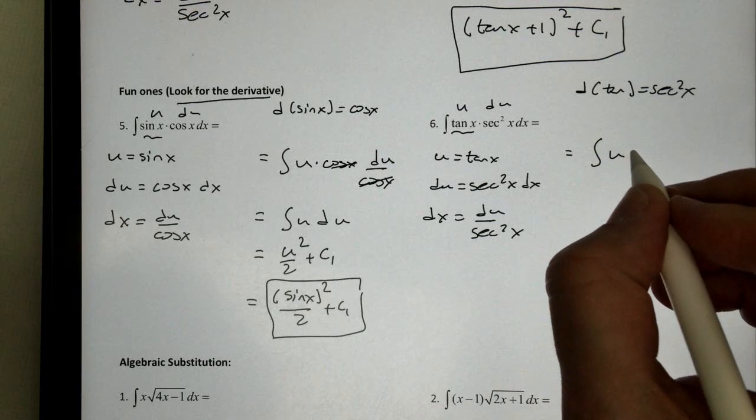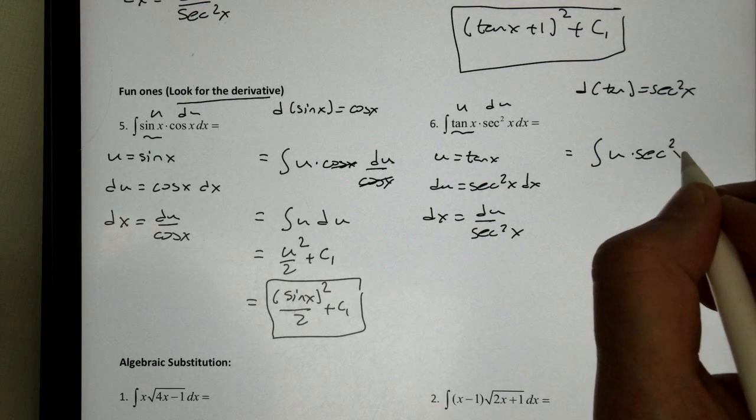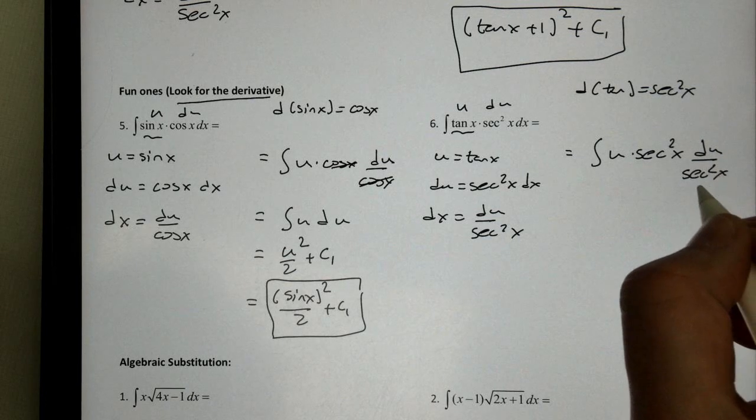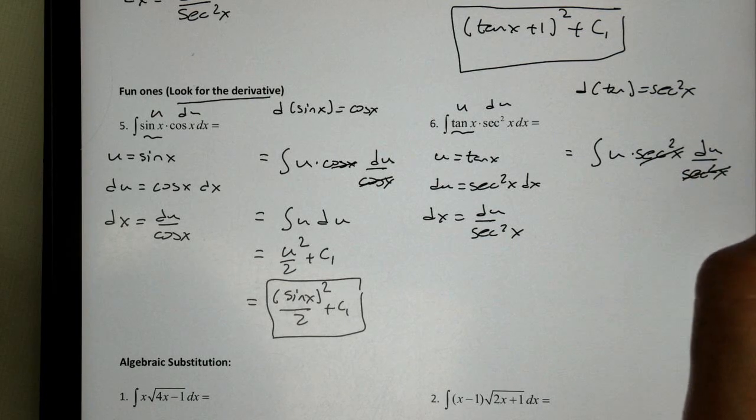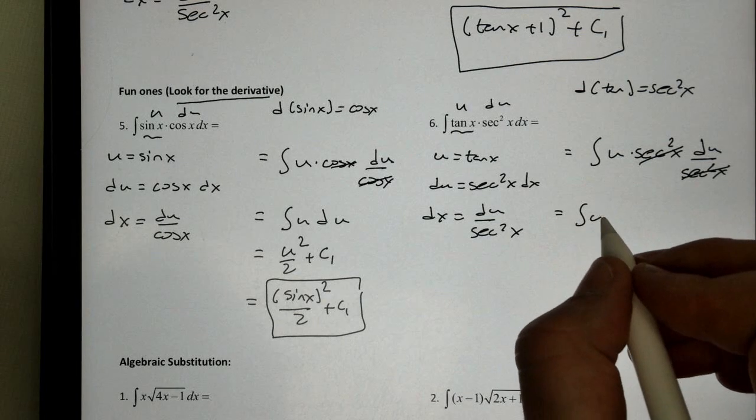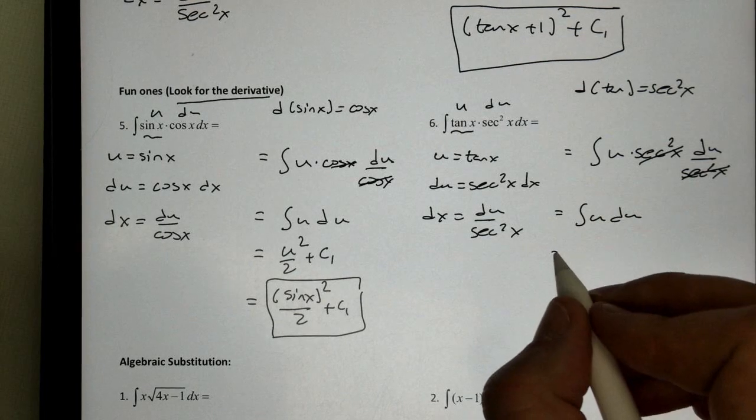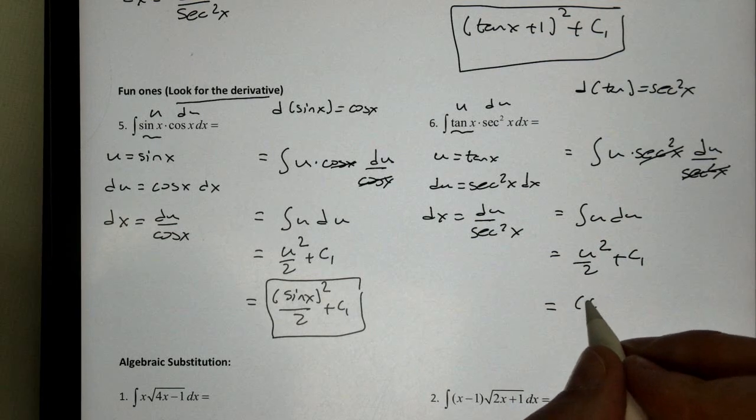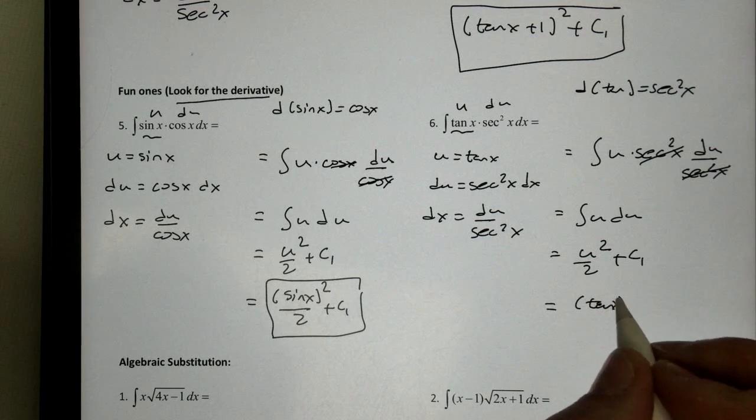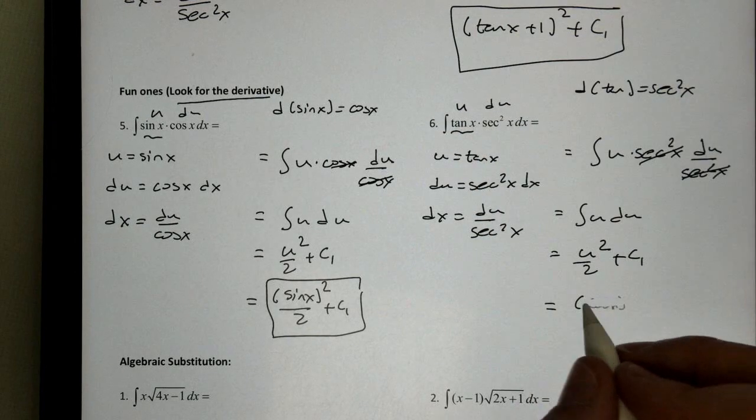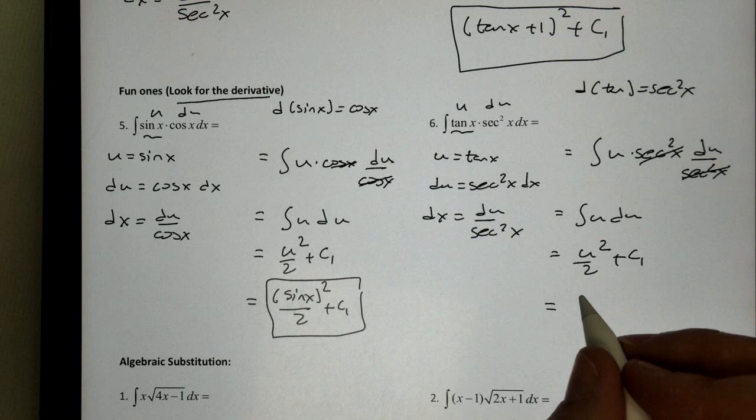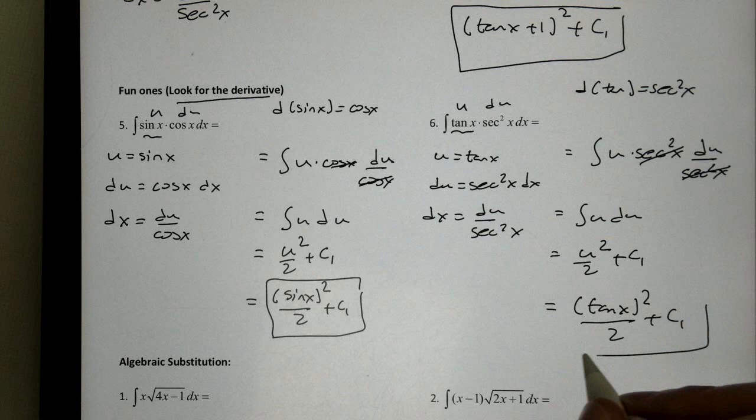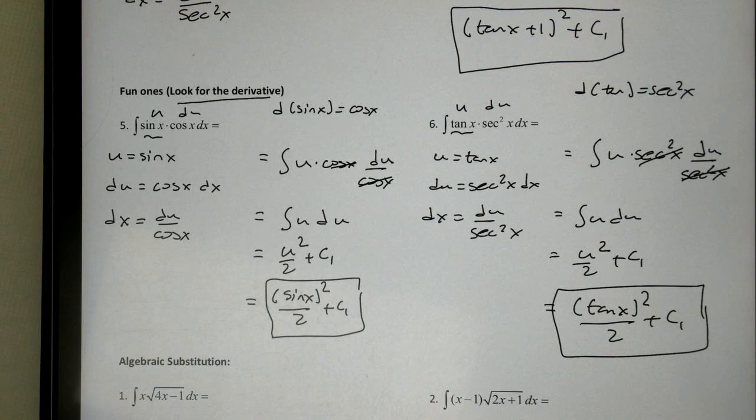So when we rewrite this, we get u times the secant squared of x du over the secant squared of x. And notice that secant squared will cancel. And what we're left with is u du, or u squared over 2 plus c1. And let's replace it with u. We get tangent of x. We would get the tangent of x squared over 2 plus c1. Don't forget your constant of integration there. There we go. Very easy to do.